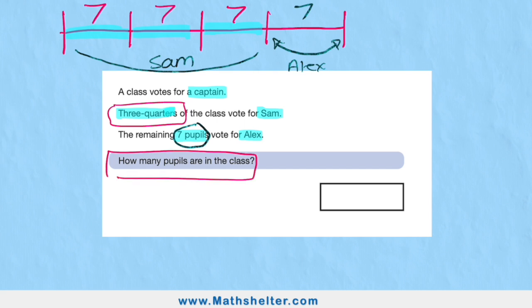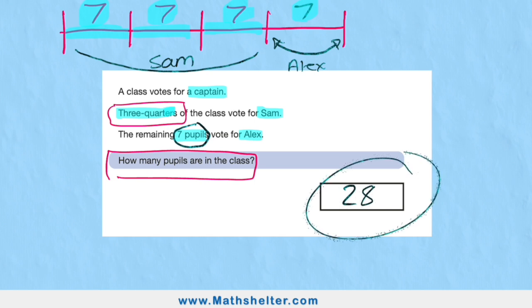So now we can see that if one quarter is seven, then each of the other quarters must be seven as well because the quarters are equivalent. It says how many pupils are in the class. Well, now all we need to do is add up all my quarters: seven, fourteen, twenty-one, twenty-eight—to get my total answer of twenty-eight students. Easy.